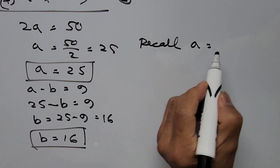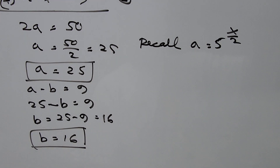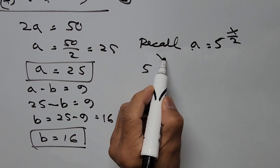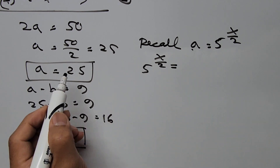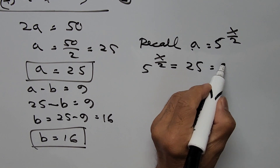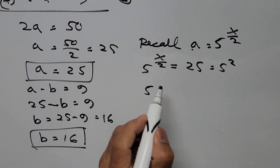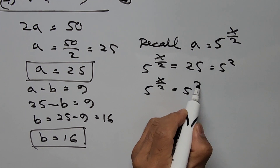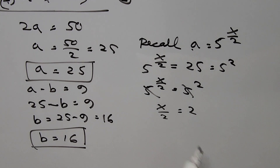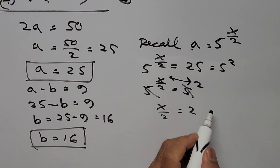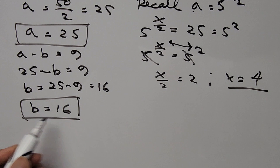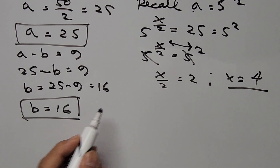Recalling that a equals 5 to the power of x over 2, we now have 5 to the power of x over 2 equals 25, which can be expressed in base 5 as 5 squared. Since we have the same base, we equate the exponents: x over 2 equals 2, so x equals 4.